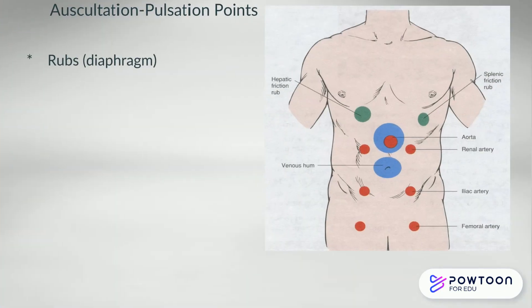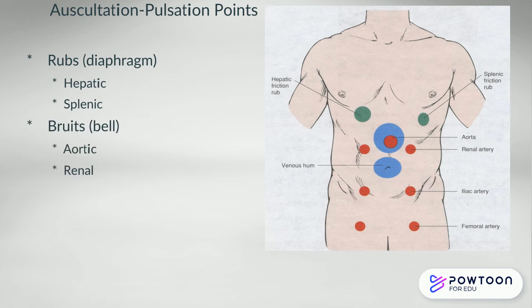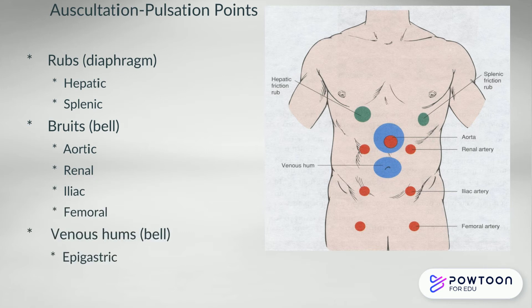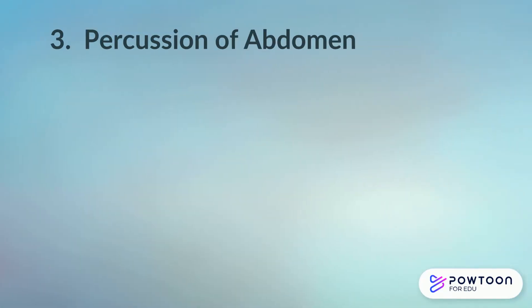This may be difficult for you to hear at this point in your training, but you may hear some vascular sounds. There are some rubs from the hepatic and splenic arteries that you can listen to with your diaphragm, as noted on the picture, as well as some potential bruits, which should be listened to with the bell, as well as venous hums.